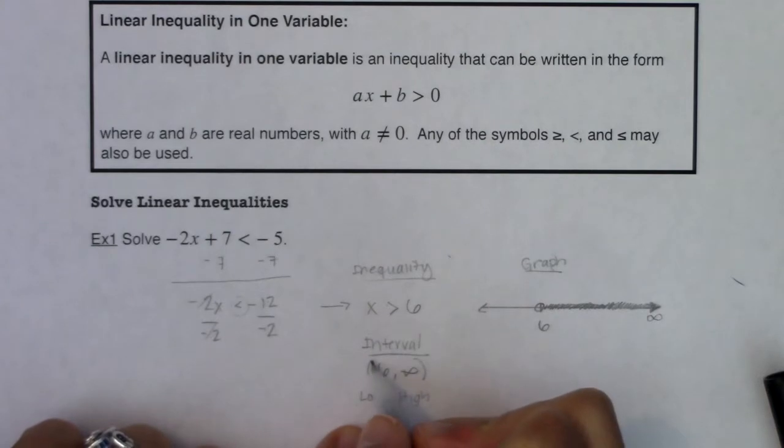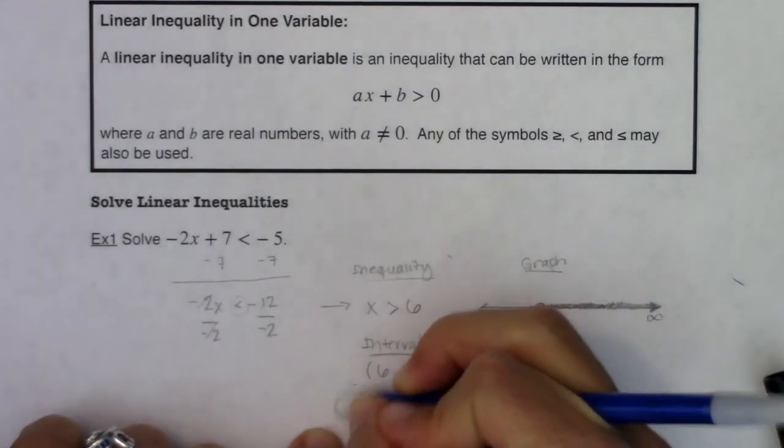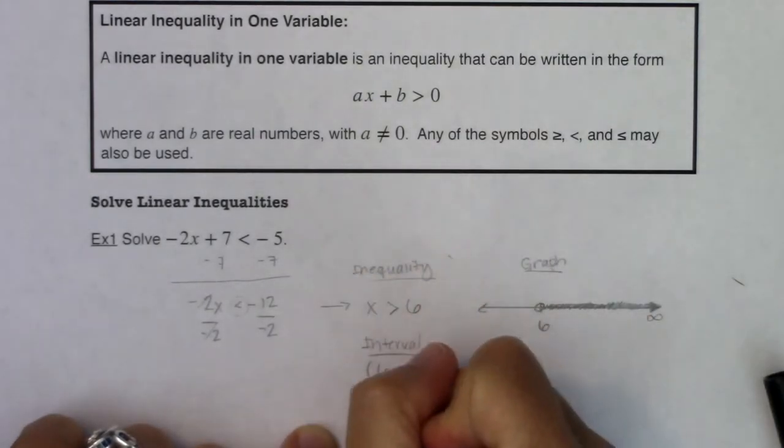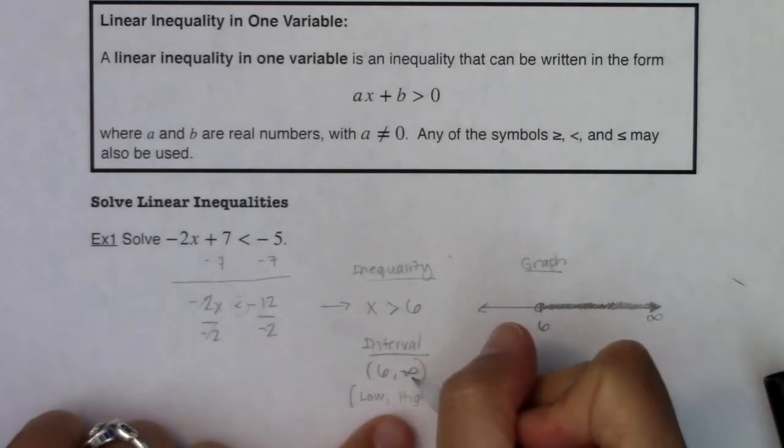Now the reason we put the parentheses here and not the bracket is because we did not include 6. So when you do not include something, when you have an open dot on your graph, you're going to put a parentheses around it. So that's why in this particular case, I had a parentheses.